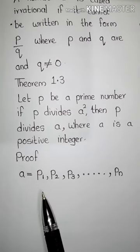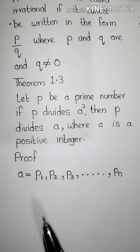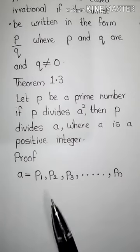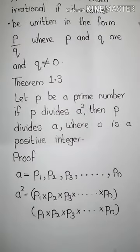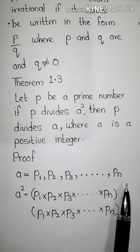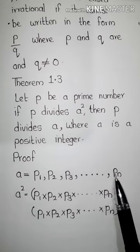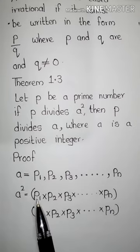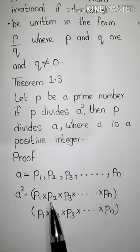Let the prime factorization of A be P1 × P2 × P3 × ... × Pn. Here it is not necessary that P1, P2, P3, ..., Pn are distinct — they can be the same or different. We can write A as the product of these prime numbers. A squared is A × A, so we can write A squared in terms of P1, P2, P3 — that is, this product multiplied two times.